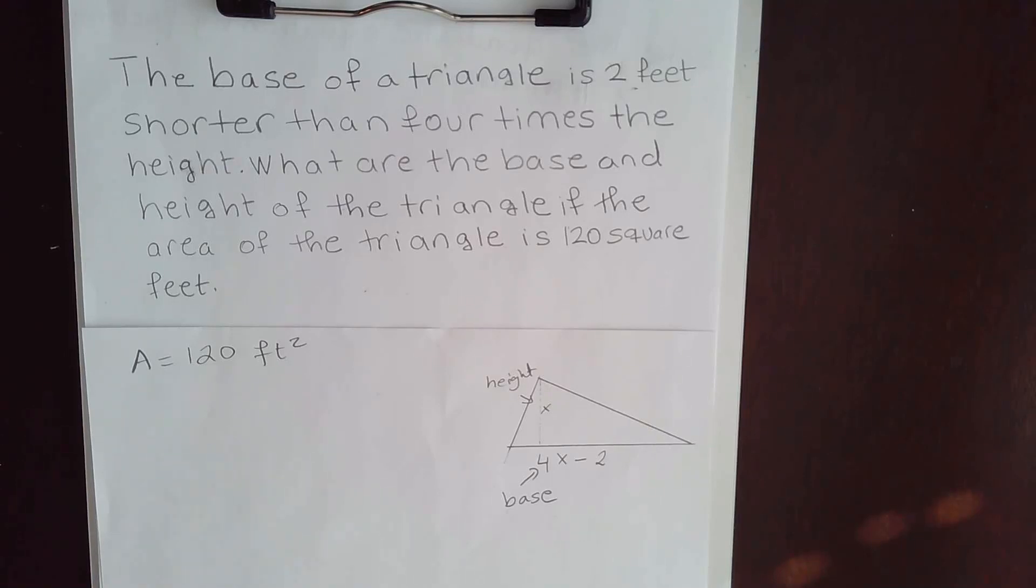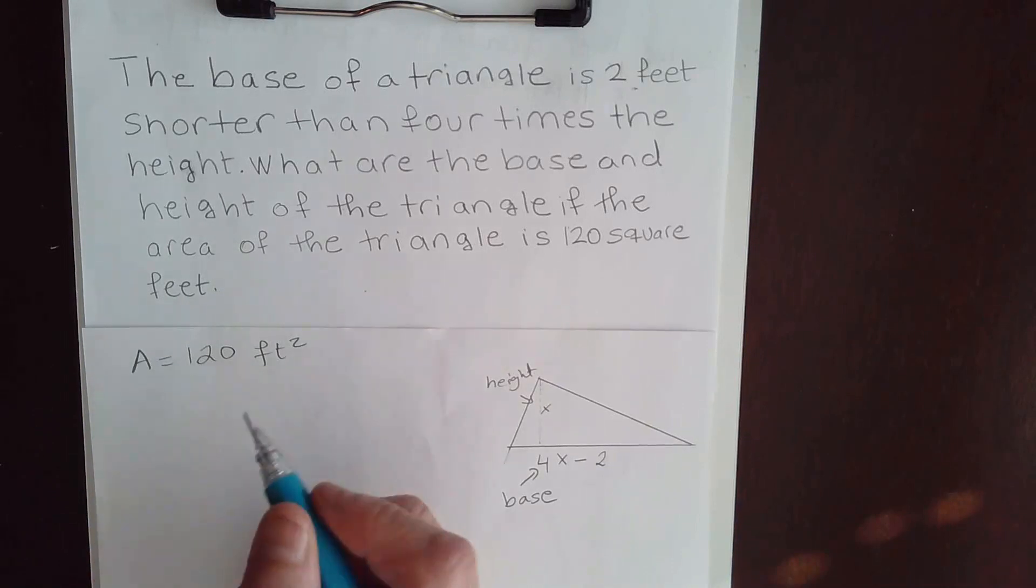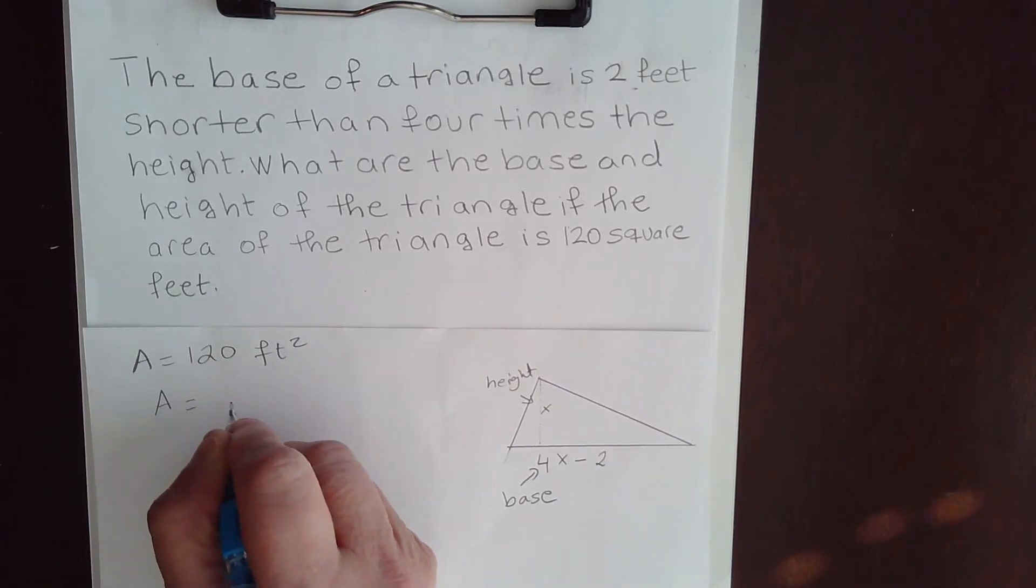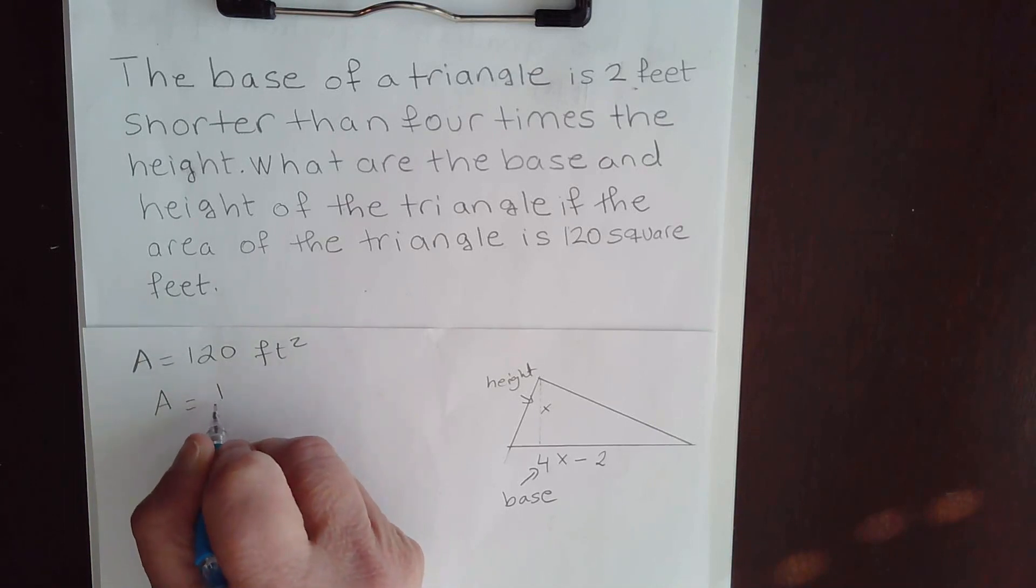So how do I find the height and the base? We have to use the, since we have the area of the triangle, we have to use the area of a triangle formula. The area is one half base times height.